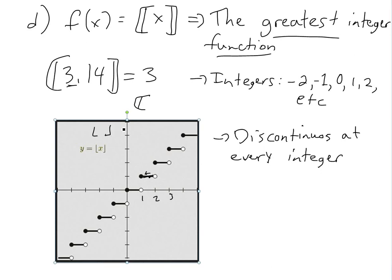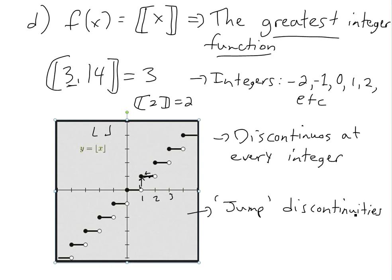So there's a jump at every single integer. These are called jump discontinuities — the function jumps from one value to another at each integer.